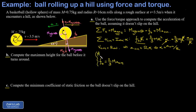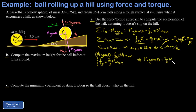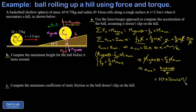Writing both equations together — mg sine theta minus fs equals m·a_cm, and fs equals two-thirds m·a_cm — and adding them to eliminate fs gives mg sine theta equals five-thirds m·a_cm. The masses cancel, yielding a_cm equals 3g sine theta over 5. Plugging in numbers: 3 times 9.8 times sine 25 degrees divided by 5 gives approximately 2.485 m/s².